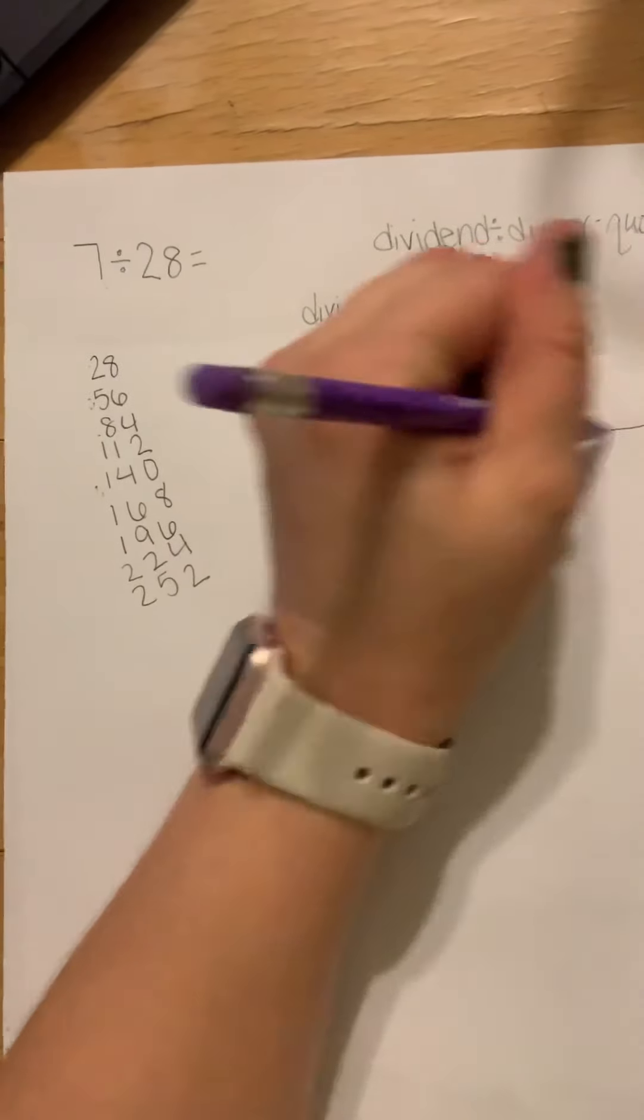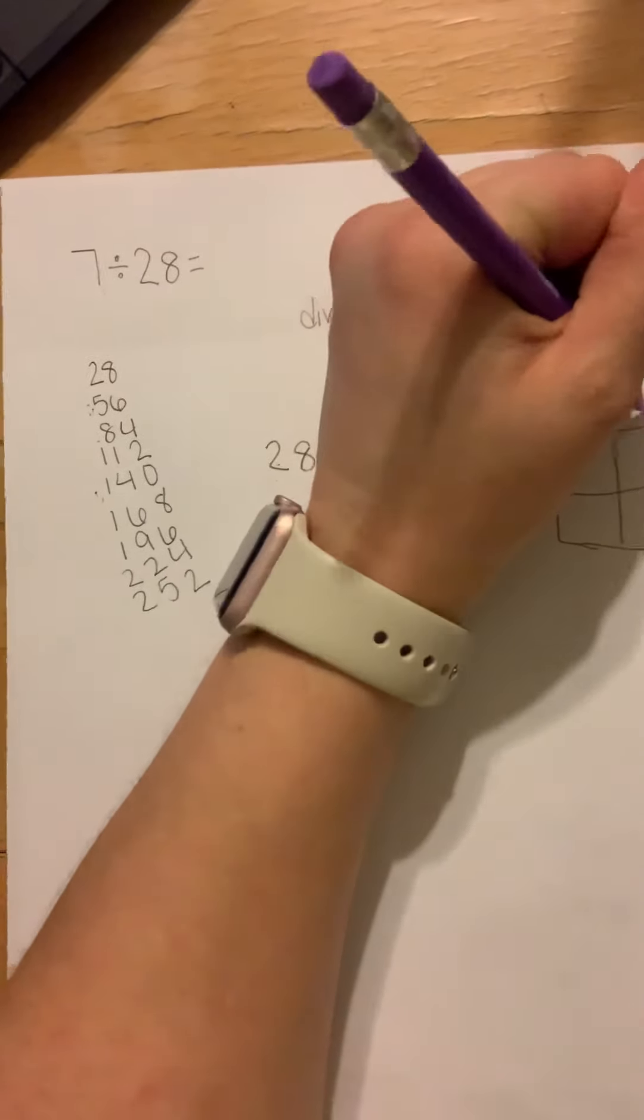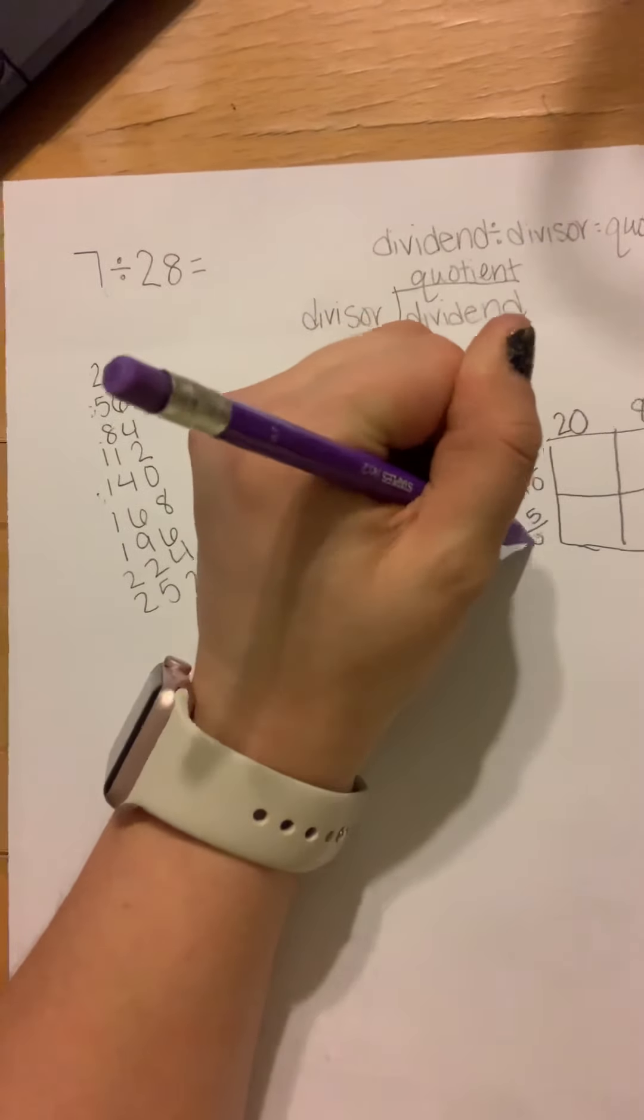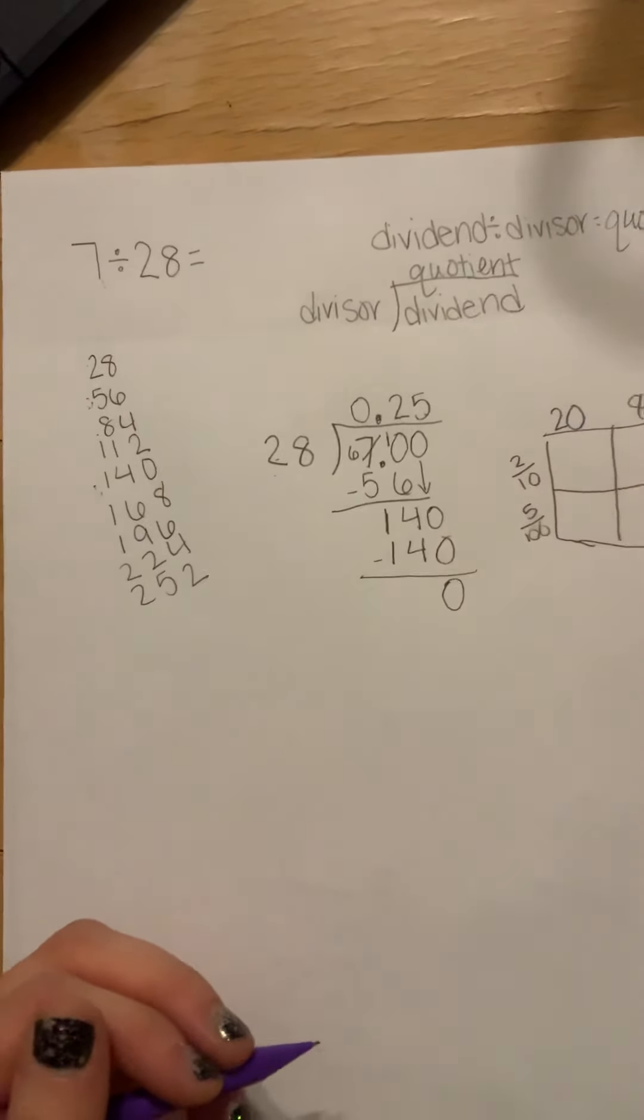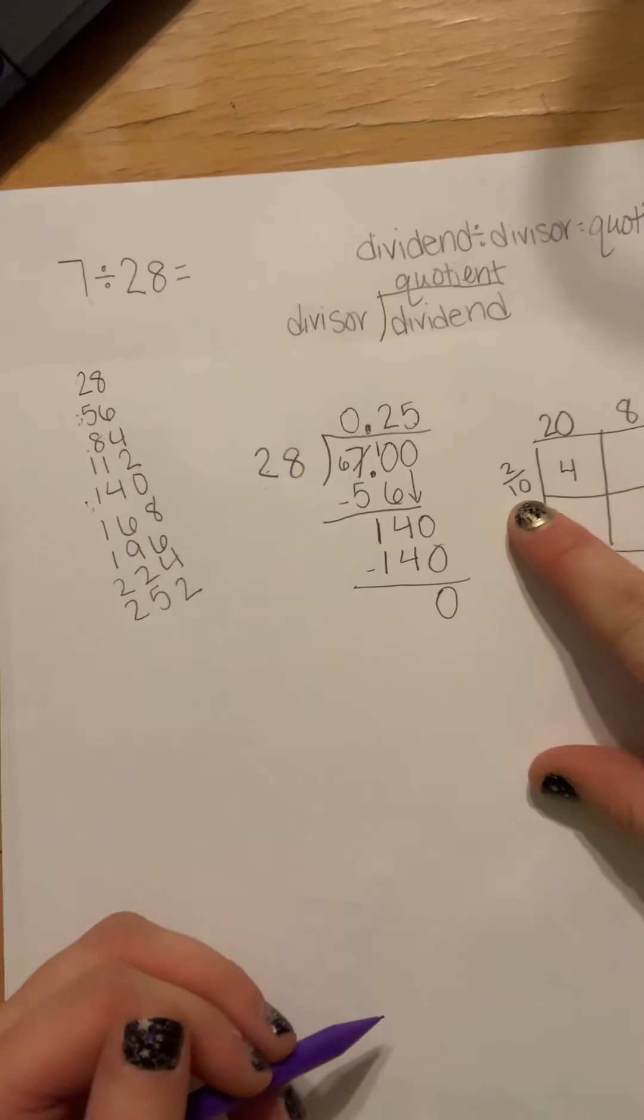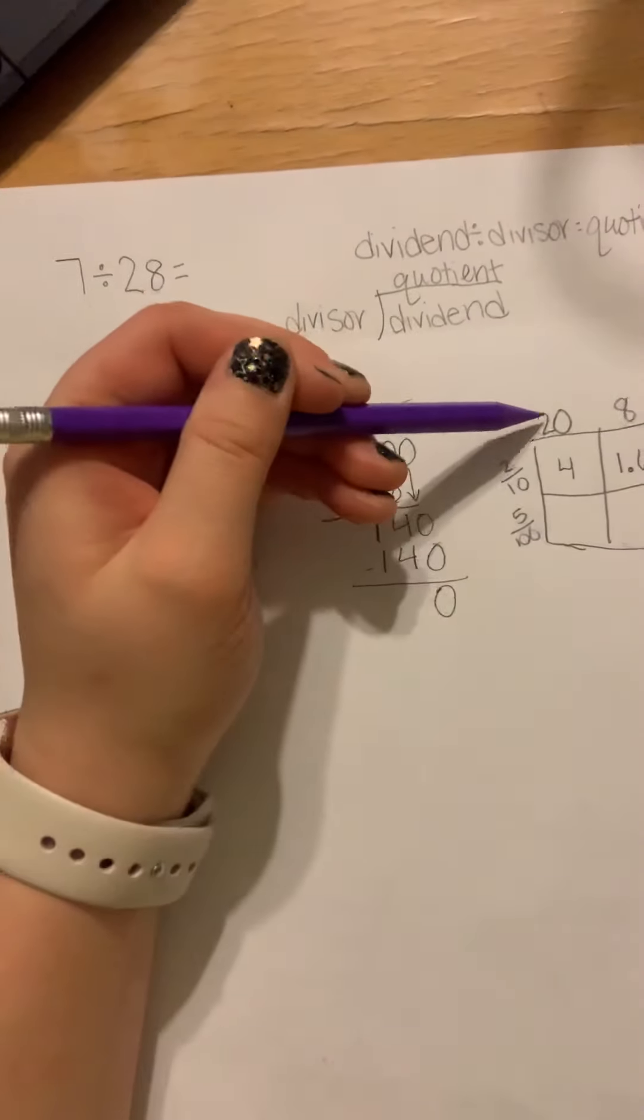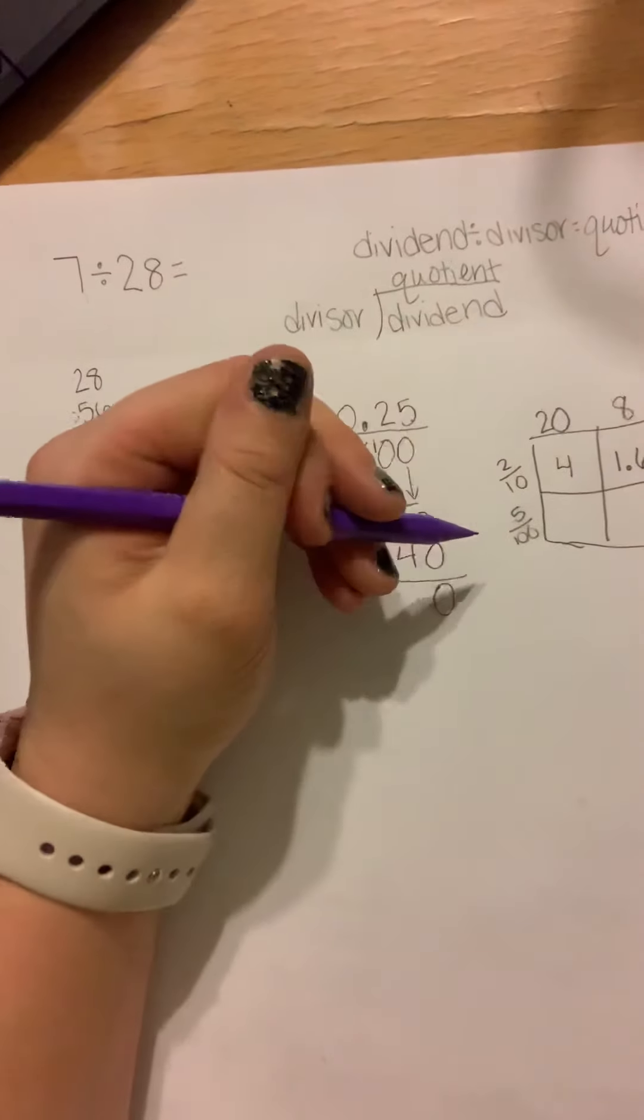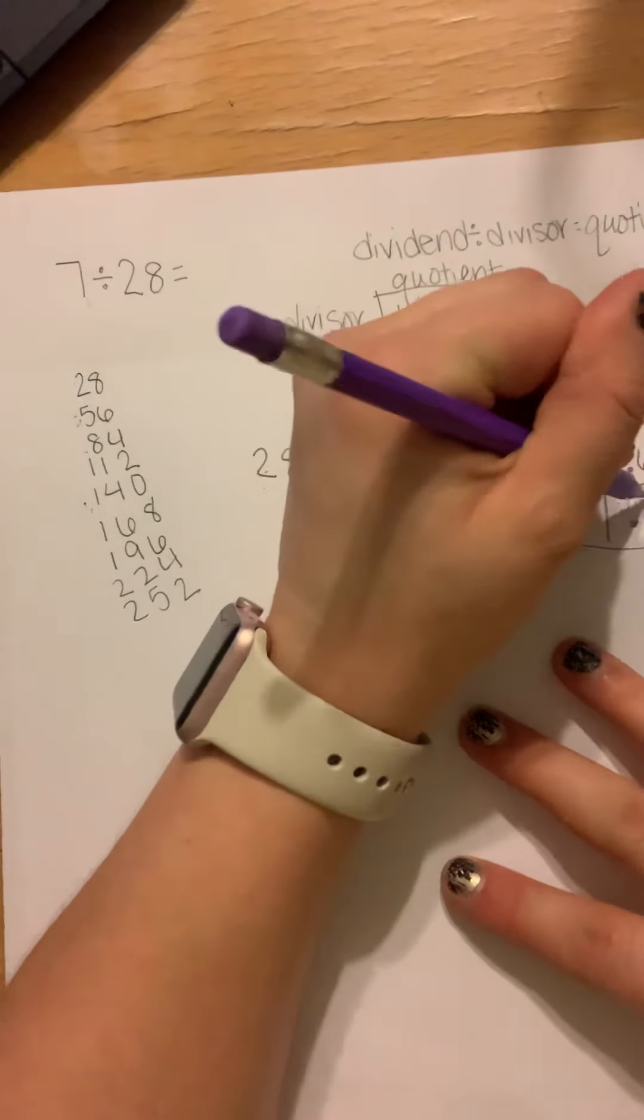Now I'm going to check my work. Today I'm going to use an area model. You don't need to. I'm just choosing to. Using the distributive property, I'm going to do 20 and 8 and 2 tenths and 5 hundredths. So 20 times 2 tenths would be 40 tenths, which would equal 4. 8 times 2 tenths would be 16 tenths, which would be 1 and 6 tenths. 20 times 5 hundredths would be 40 hundredths, or 4 tenths.